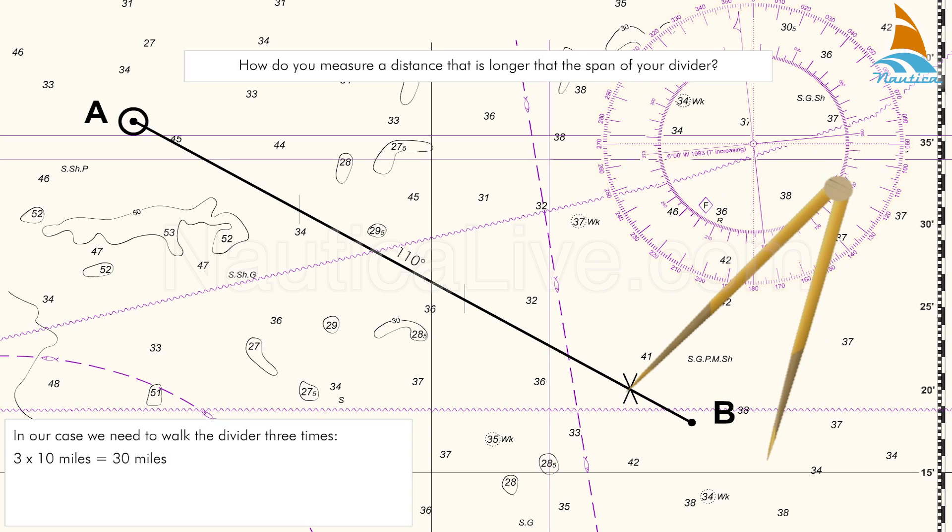Now measure the distance from point X to point B and apply this span on the latitude scale which is closest to point B.